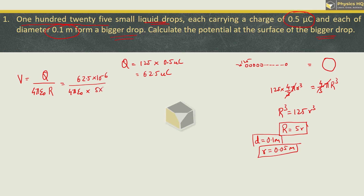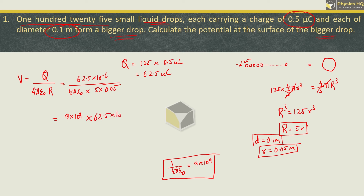Capital R becomes 5 times small r, which is 5 times 0.05. Now please remember, 1 upon 4 pi epsilon naught is simply 9 into 10 raised to 9. So we can write 9 into 10 raised to 9, into 62.5 into 10 raised to minus 6, divided by 5 into 0.05. Simplifying, this gives 12.5, then 25, and 25 into 9 gives 22.5. Adjusting the power of 10, we get 22.5 into 10 raised to 6 volt.